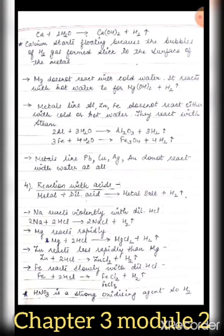However, magnesium and manganese are exceptions — these two metals react with dilute HNO3 giving out hydrogen gas. Mg + HNO3 gives Mg(NO3)2 plus H2 gas. Mn + HNO3 gives Mn(NO3)2 plus H2 gas. So HNO3 is generally an oxidizing agent, but not with these two metals.